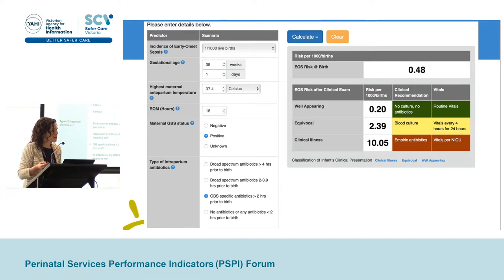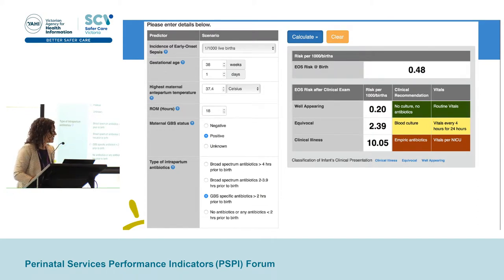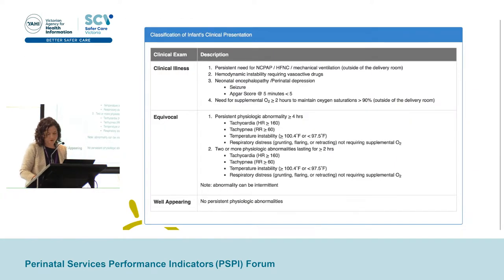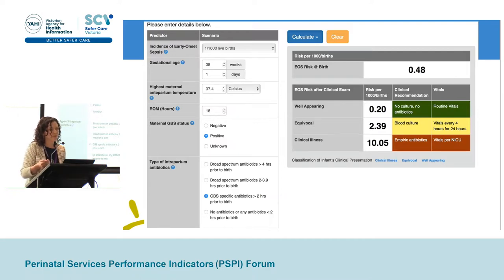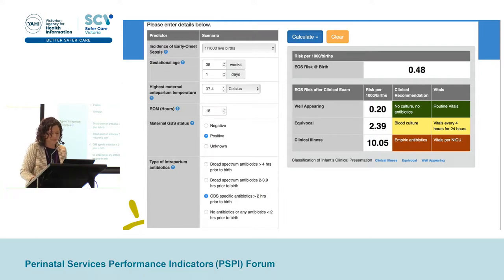This model was developed using a cohort of 600,000 term infants, and I'll share some data around the evaluation of the calculator. One note for the Monash setting is that at the same time as implementing the calculator in November 2018, we also introduced universal GBS screening. The advantage is that we will now know the GBS status of mothers rather than it being unknown. Most mothers will be negative, and this will also positively impact the risk assessment results for individual babies.